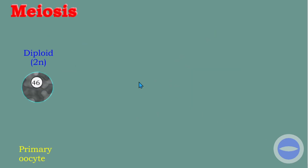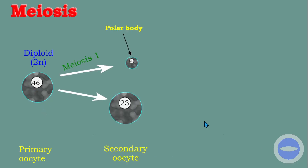We call that one diploid cell the primary oocyte, containing 46 chromosomes. As it undergoes meiosis one, this diploid cell produces one haploid cell with 23 chromosomes and another haploid cell also with 23 chromosomes but very small — this small cell we call a polar body. The larger one, with a bigger cytoplasm, is called the secondary oocyte. The secondary oocyte is the one with the possibility of being fertilized.